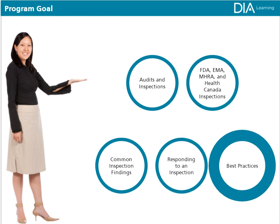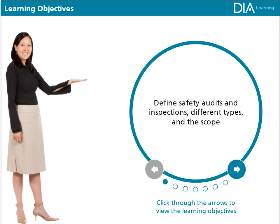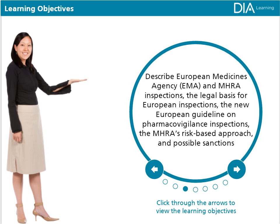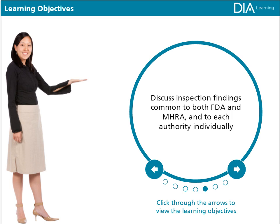Upon completion of this module, learners should be able to: define safety audits and inspections, their different types and scope; describe FDA inspections and possible sanctions; describe EMA and MHRA inspections, including the legal basis for European inspections, the new European guideline on pharmacovigilance inspections, the MHRA's risk-based approach, and possible sanctions; and describe Health Canada safety inspections.